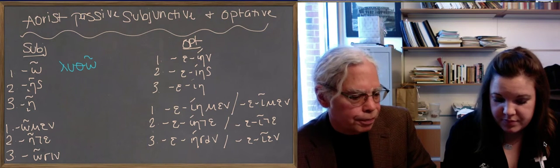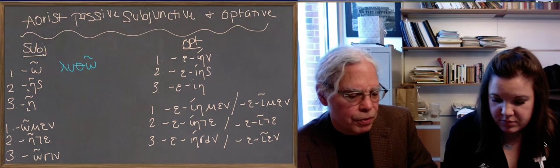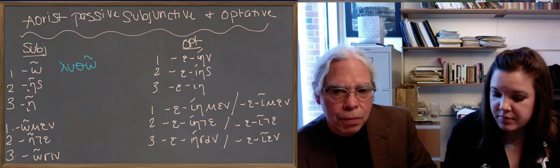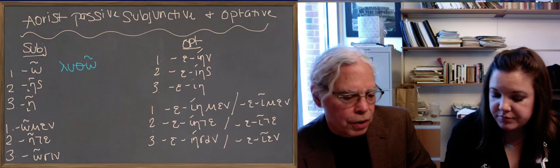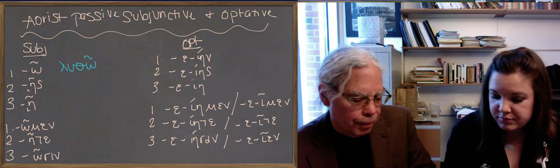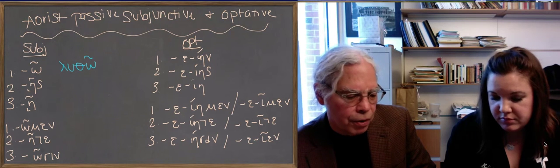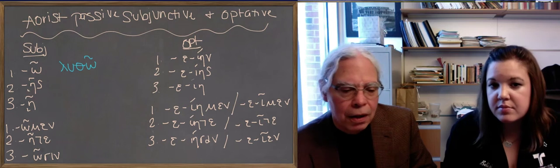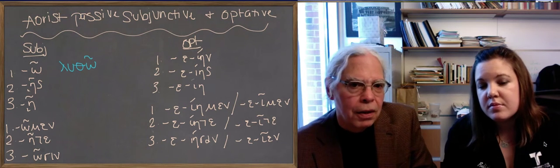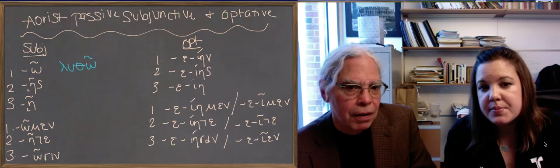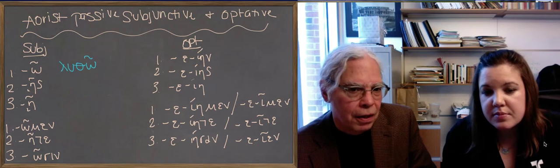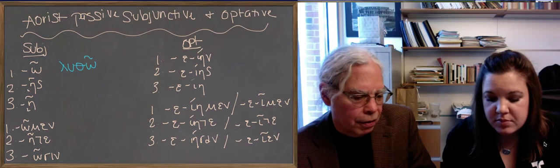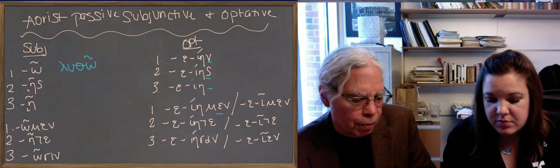The aorist optative has what we've seen before in some other aorist optatives. That is, it has two forms, one in which the sign of the optative is the iota eta before the personal endings. And notice these personal endings that we're looking at. We've got, in the singular, nu, sigma, nothing before the iota eta, and in the plural, men, te, and san in the iota eta form of the optative.